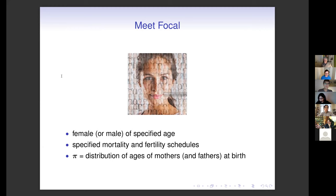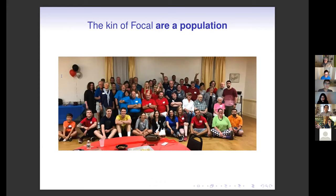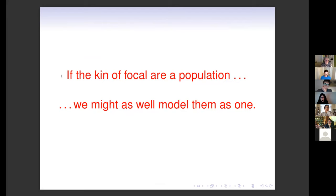The key insight I had — and I'm certainly proud of it — is that the kin of focal of any particular kind, whether cousins, aunts, or nephews, are a population. This is a picture of the population of a bunch of my relatives at a family reunion. So the kin of focal are a population, and my thought was: we might as well model them as one. How do you do that?